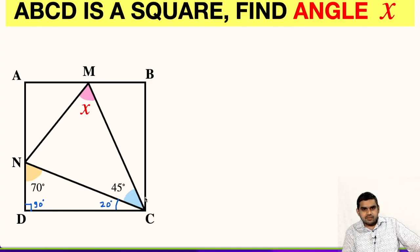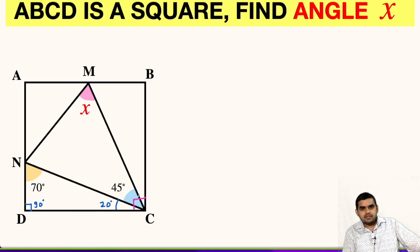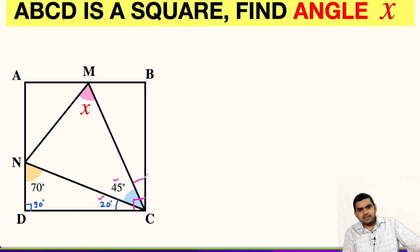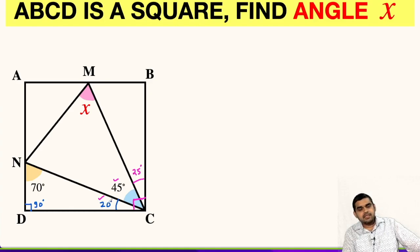Likewise, angle C is 90 degrees because ABCD is a square. This 90-degree angle is made up of three angles: the first is 20 degrees, the second is 45 degrees, and these three must sum to 90 degrees. So the third angle will be 25 degrees, because 25 plus 45 is 70, and 70 plus 20 is 90.